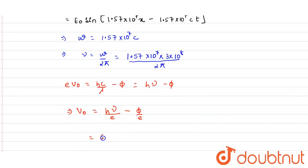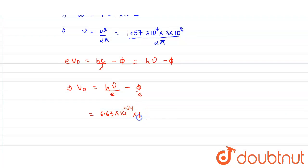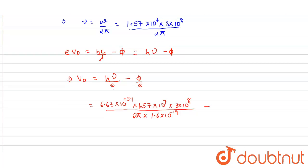Our value of h is 6.63 into 10 raised to the power minus 34, into nu we have calculated as 1.57 into 10 raised to the power 7 into 3 into 10 raised to the power 8 divided by 2 pi into e is 1.6 into 10 raised to the power minus 19, minus the work function phi given to us as 1.9 electron volts. So it will be 1.9 into 1.6 into 10 raised to the power minus 19 divided by e that is 1.6 into 10 raised to the power minus 19.